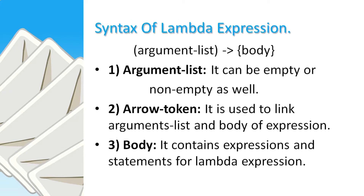This is the syntax of a Lambda Expression. You can see: this is the argument list, this is the arrow token, and this is the body. The argument list can be empty or it can contain an object. The arrow token — you might have seen this kind of signature in C++ — is used to link the argument list and the body. The body is the place where you write your expressions and statements for evaluating the Lambda Expression.